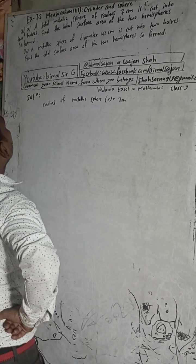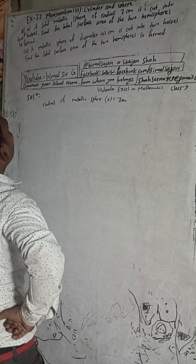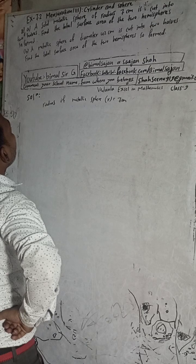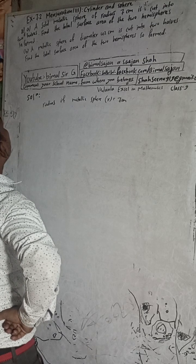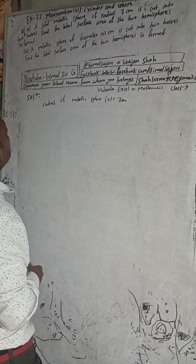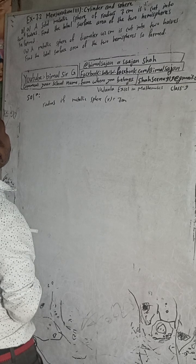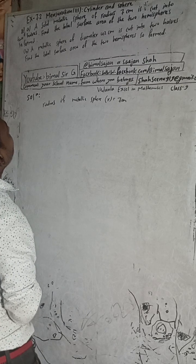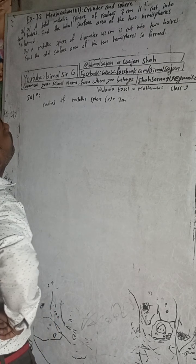It is cut into two halves. That means we need to find the total surface area of the two hemispheres.